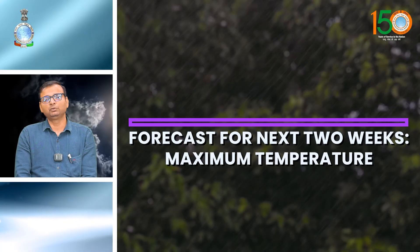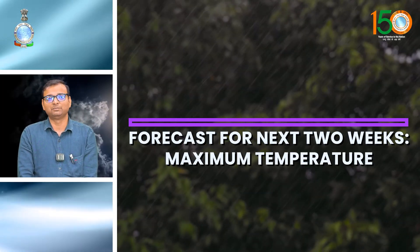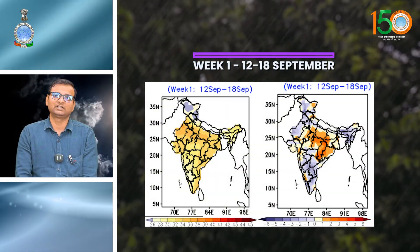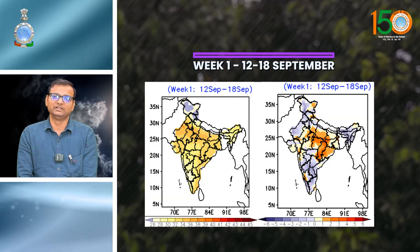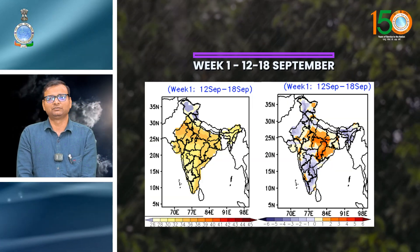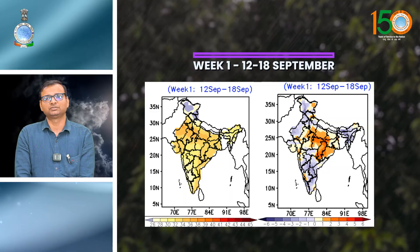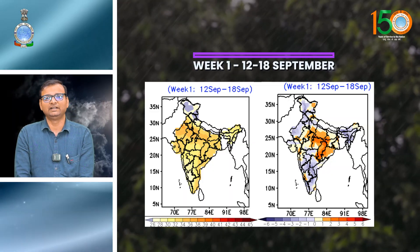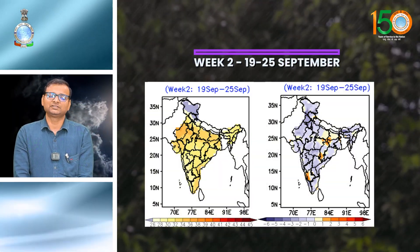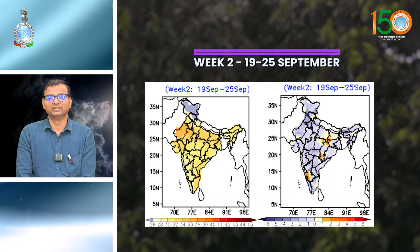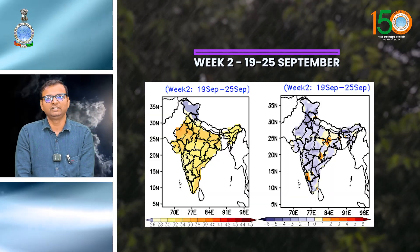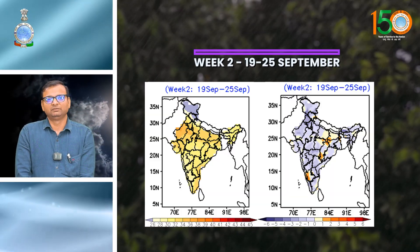For maximum temperature in week one, temperatures are likely to be near normal or below normal over most parts of the country, except many parts of central and east India. For week two, maximum temperatures are likely to be near normal over most parts of the country.